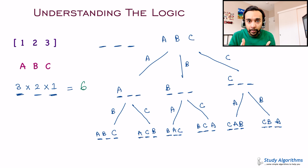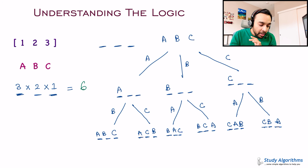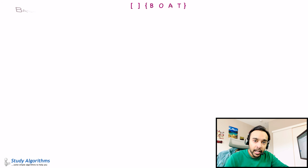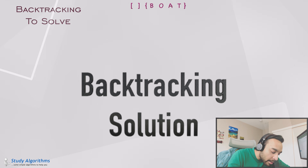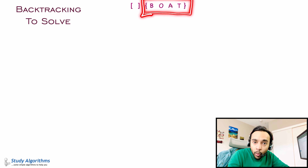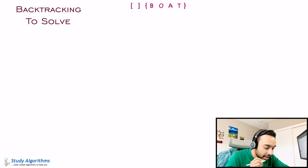If you're new to backtracking and want to learn more, check out the link in the description below. Now that you know you have to apply the backtracking technique, let me start with a generic example. I have four different characters: B, O, A, T, and we will try to find all permutations using the backtracking technique.